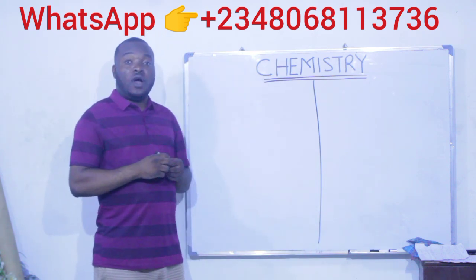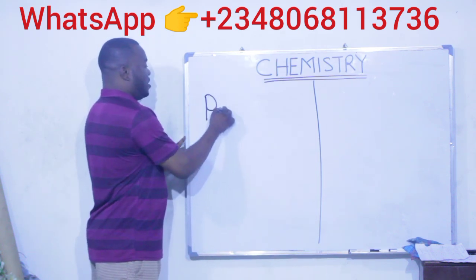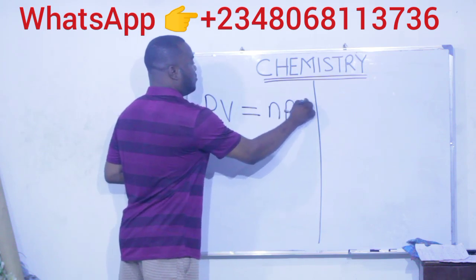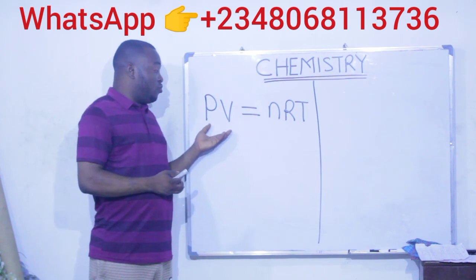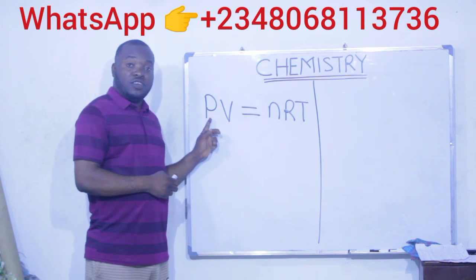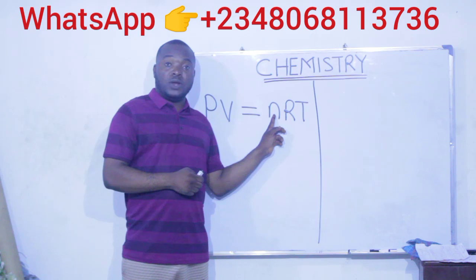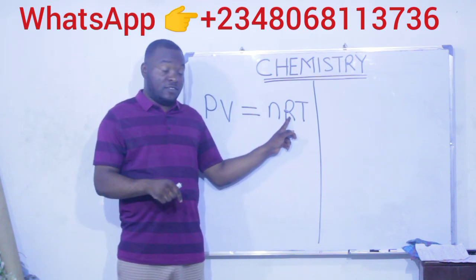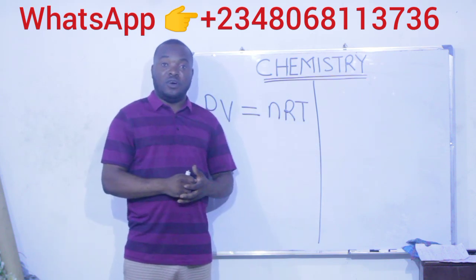Recall that for an ideal gas the equation is giving us PV is equal to nRT. This equation is called the equation of an ideal gas where P stands for the pressure of the gas, V stands for the volume, n is the number of moles of the gas present, R is the universal gas constant which we are working on, and T represents the temperature of the gas.